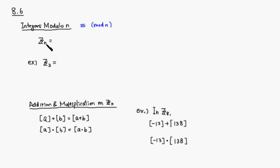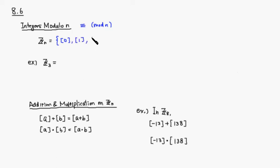For integers mod n, I tend to use all possible remainders when you divide by n. So it's 0 through n minus 1. You have equivalence class represented by 0, equivalence class represented by 1, equivalence class represented by 2, and all the way to equivalence class represented by n minus 1.